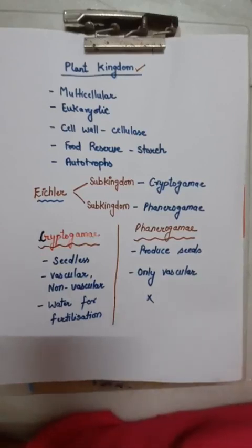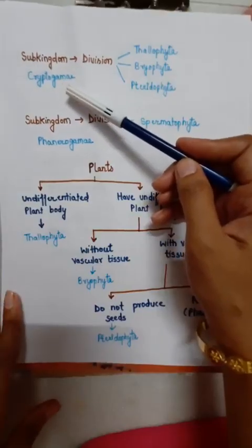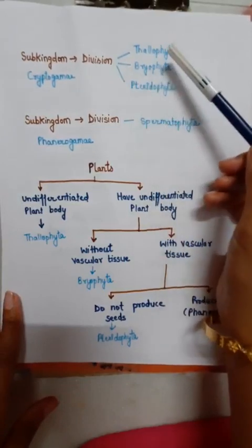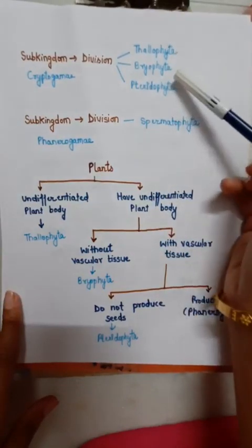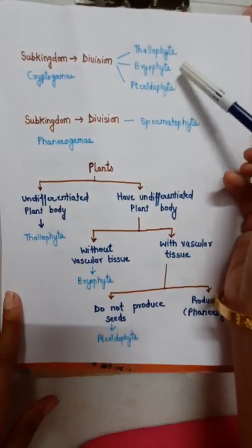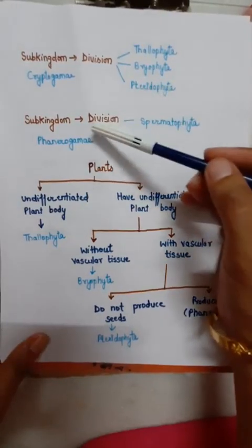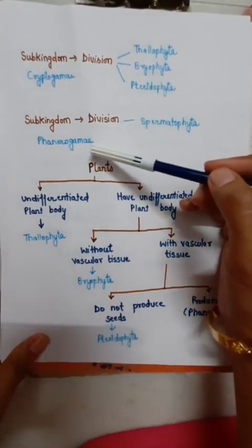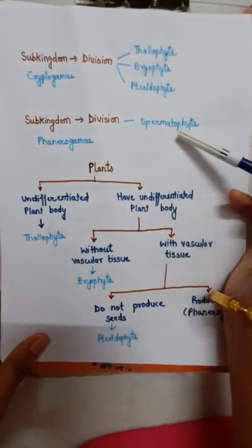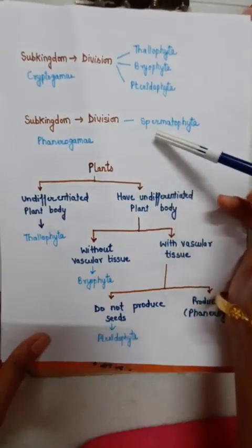Sub-kingdom Cryptogamae is further divided into three divisions: Thallophyta, Bryophyta, and Pteridophyta. Sub-kingdom Phanerogamae has only one division, which is Spermatophyta.